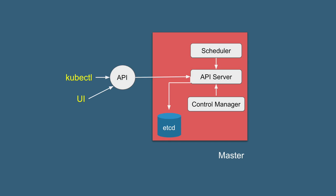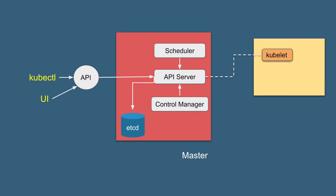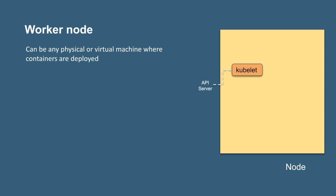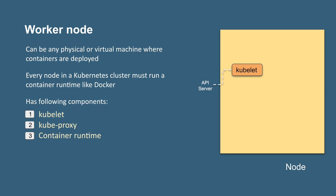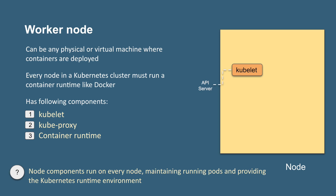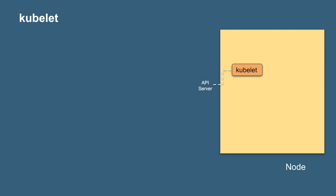Now let's look at the components of a worker node and how the master interacts with it. A worker node can be a physical or virtual machine in a Kubernetes cluster, and every node should run a container runtime environment like Docker. There are three components in a worker node: Kubelet, kubeproxy, and container runtime. These components run on every node and are responsible for maintaining the pods and providing the Kubernetes runtime environment.